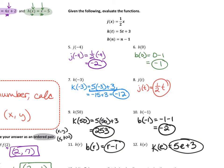Here's my work for those questions. For k of 50, we plug 50 into function k: 5 times 50 plus 3 equals 253. For b of negative 1, we replace every n with negative 1: negative 1 minus 1 equals negative 2. Numbers 11 and 12 ask you to replace the variable without evaluating. b of r means replace every n in function b with r, giving r minus 1. k of e means replace every t with e: k of e equals 5e plus 3.